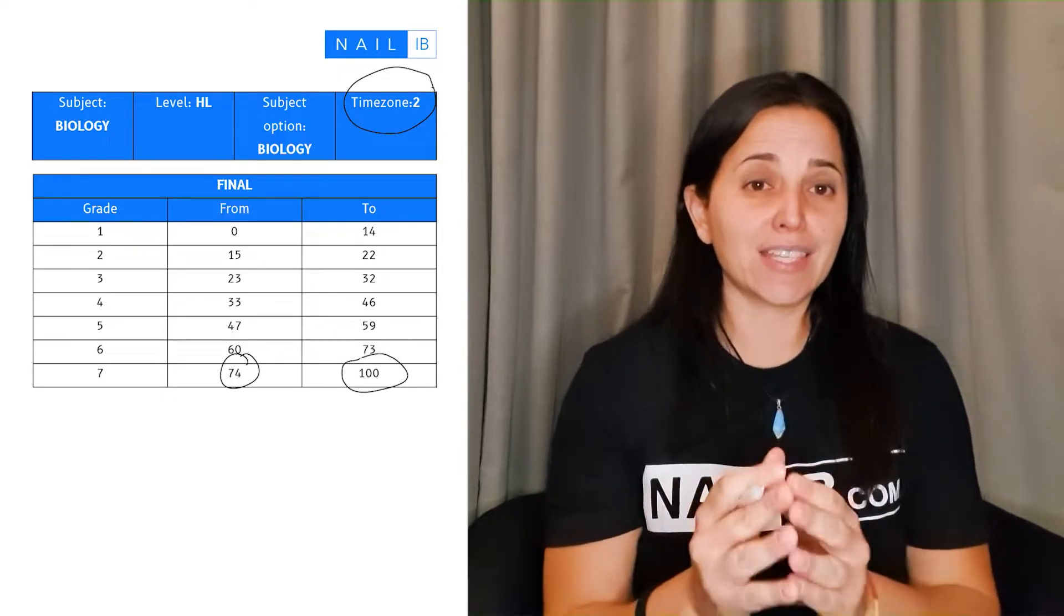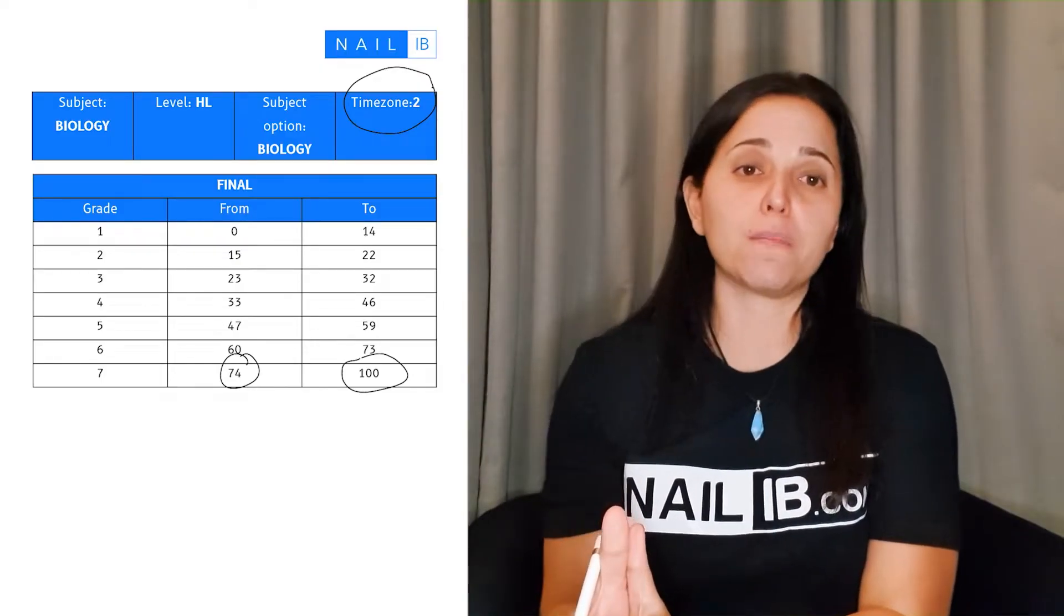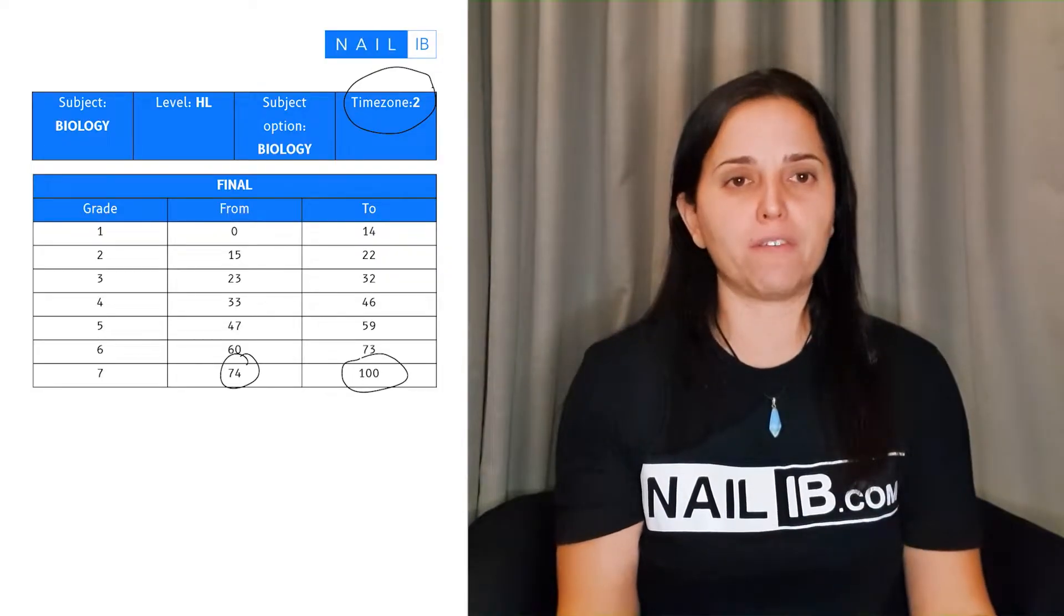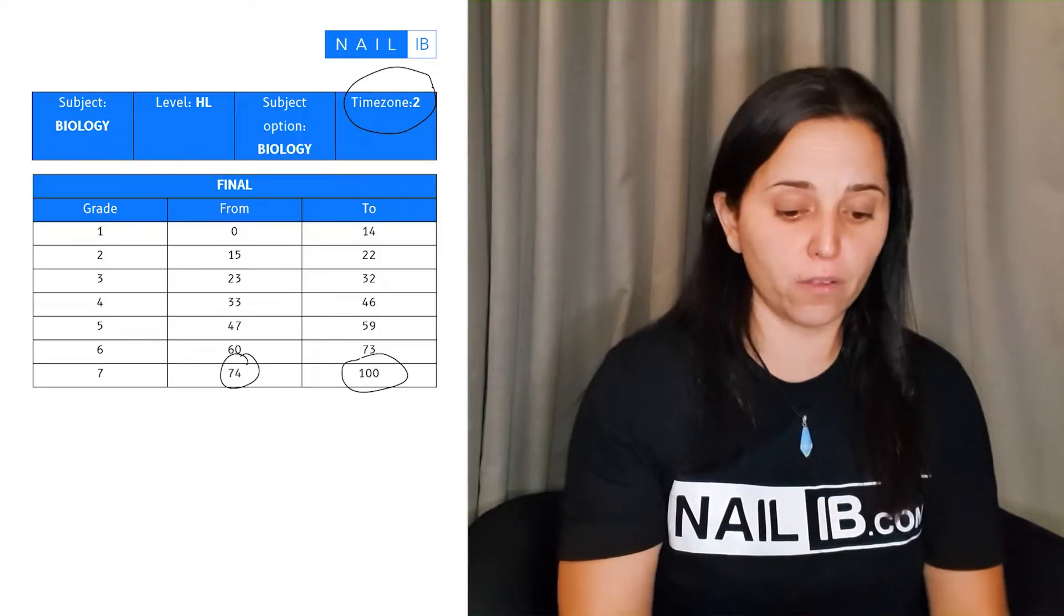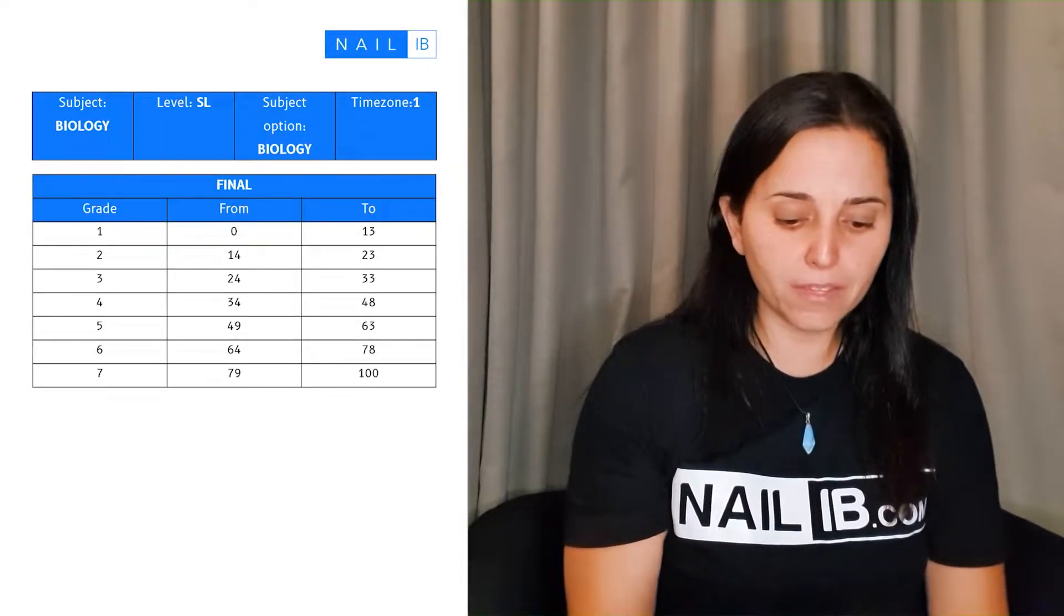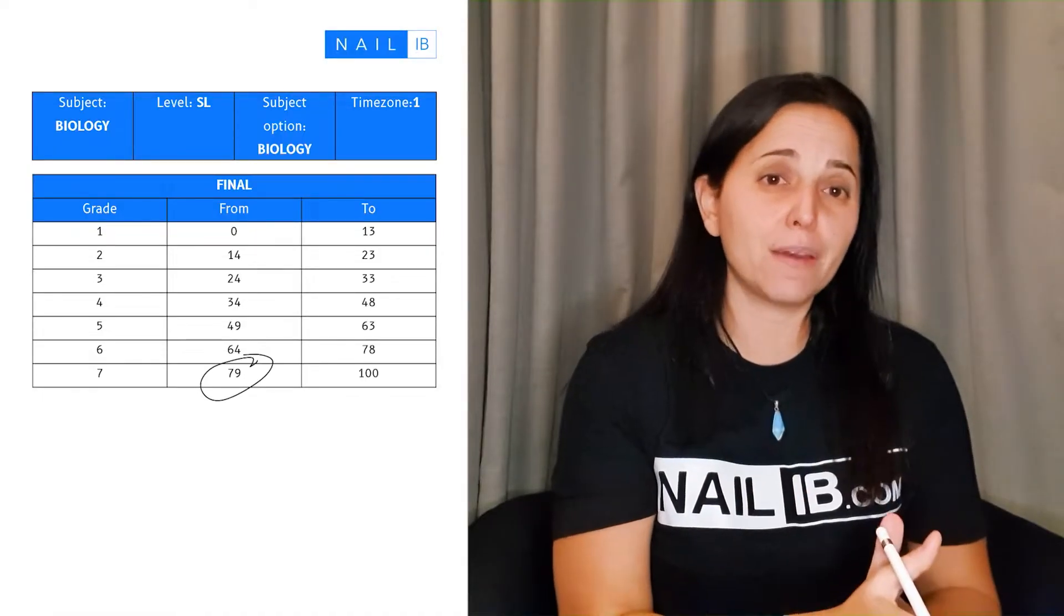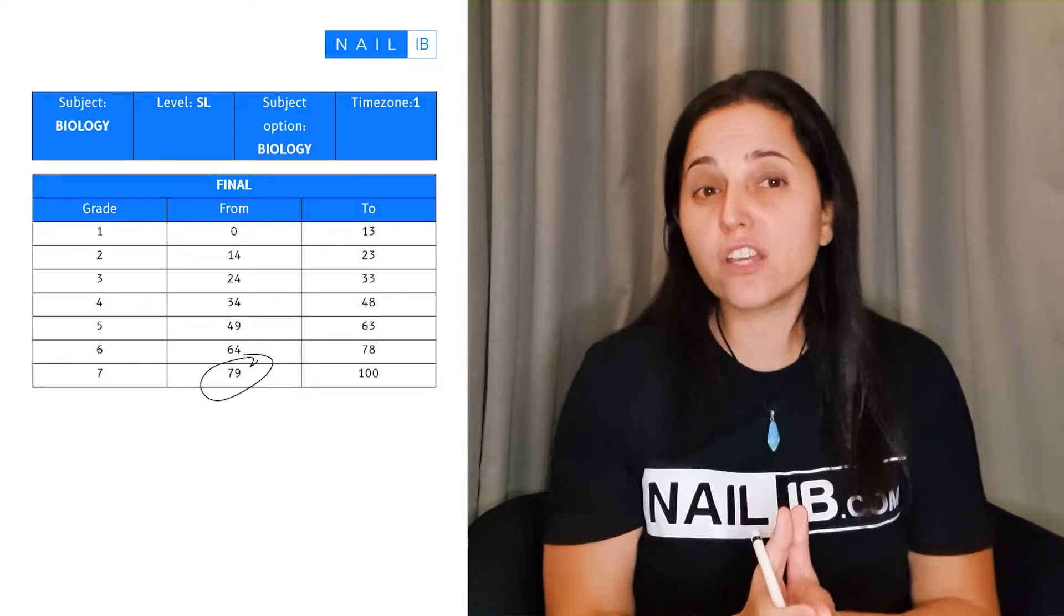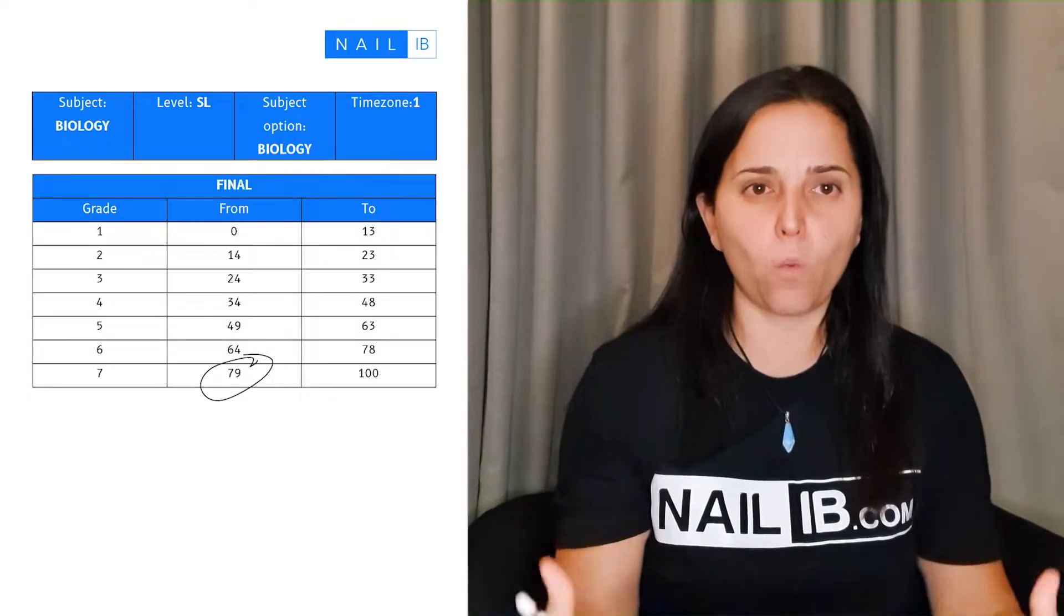Once again, that's 74 points—paper one, paper two, and your lab report that you're sending to IB. Together, you're getting points out of those. If you get above 74, then you are a seven. This is in the case of an HL situation. Now if you look at the SL situation, it will be a little bit different. If you look at seven, it will be 79 points for you to get basically a seven in SL.